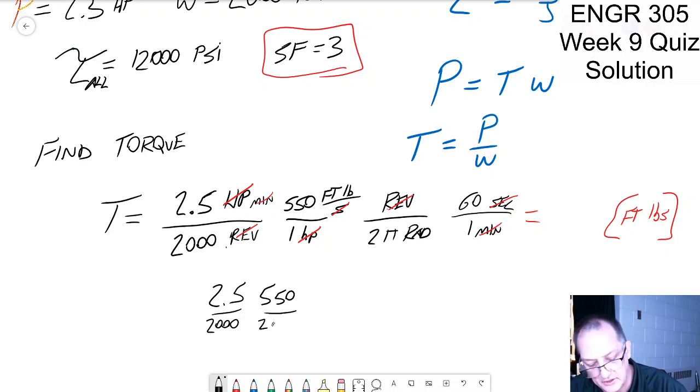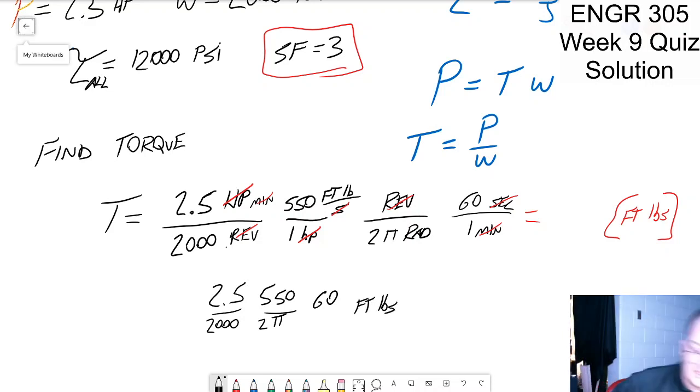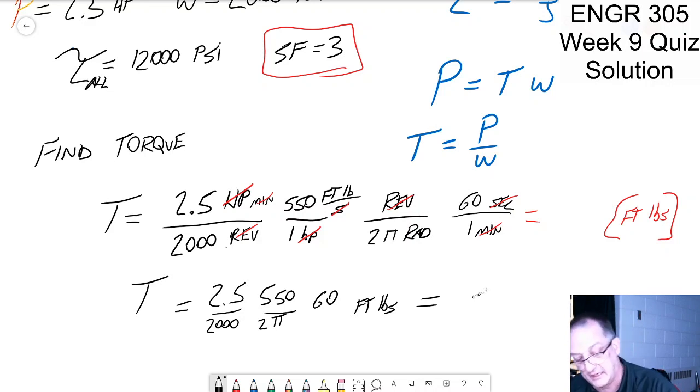2000, 550, 2 pi, 60, and the units are foot pounds. All right, I got to grab a trusty dusty calculator. I'm pausing. Sorry I started lecturing before I turned the pause back off. I put the torque equals all of that equals and then I ran my calculator and I got 6.57, there's some round off there, foot pounds.